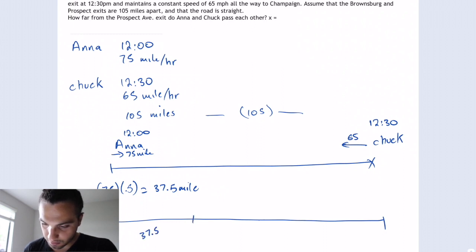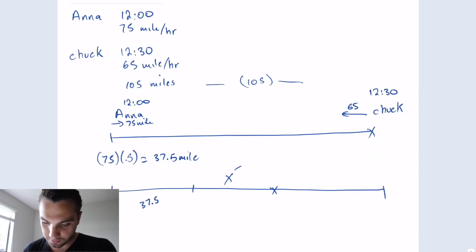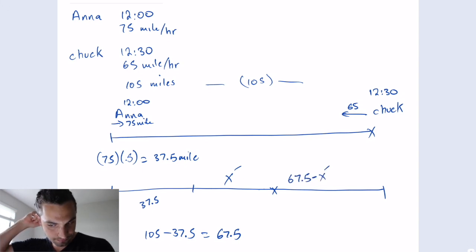Then they're going to connect about this point in here closer to Chuck because Chuck has a less velocity. So let's call this point x prime. And this point is going to be 37. So the total distance is 105 minus 37.5 to get 67.5. So this distance here is going to be 67.5 minus x prime.